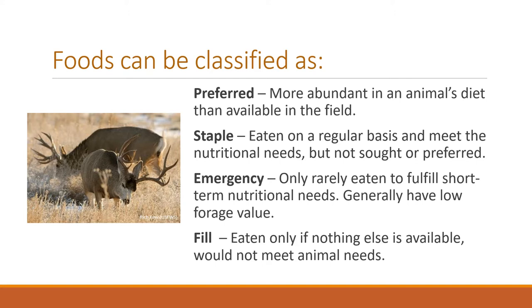The actual food out there can be classified in a few different ways. Preferred foods are more abundant in the animal's diet than they are available — the animal is actively selecting them. A staple food is just eaten on a regular basis to meet nutrient requirements; it's not really sought or preferred, just eaten in high quantities. Emergency foods are rarely eaten but fulfill a short-term nutritional demand — generally low in quality, like dead standing grass. Finally, there are plants animals eat just to fill their gut — things like wood — that are of no real value to the animal.